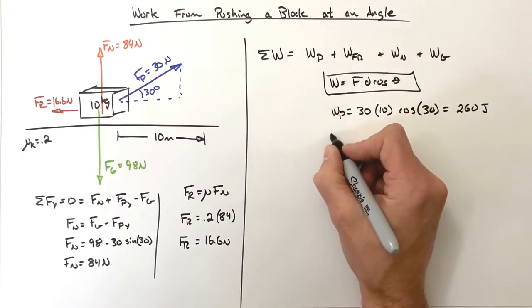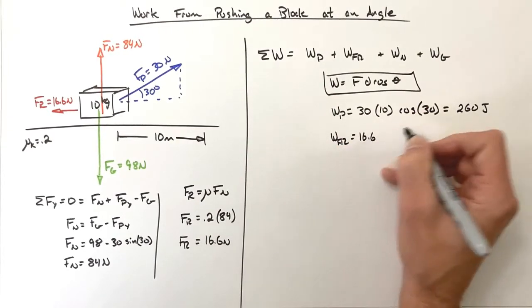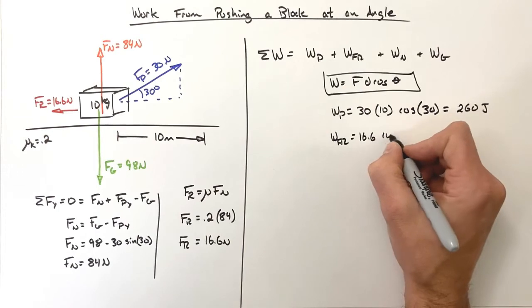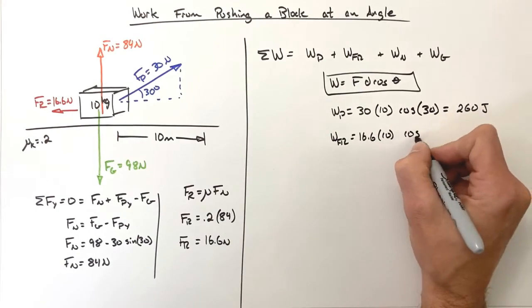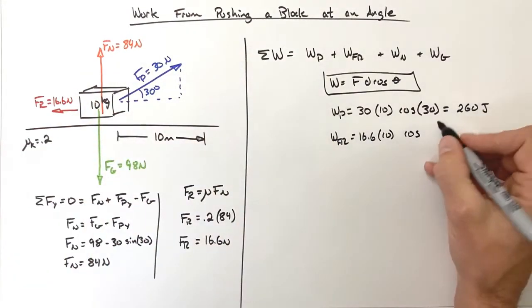The work by the friction force is going to be 16.6 (that's the force) times the displacement of 10 times the cosine of the angle between the friction force backwards and the displacement forward.